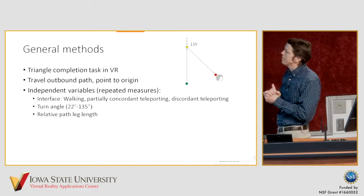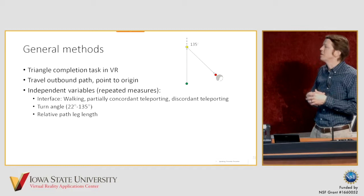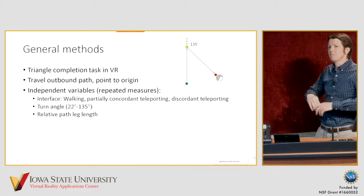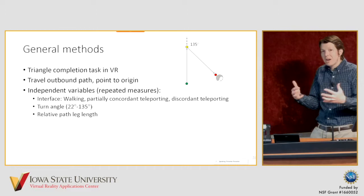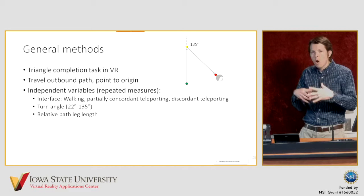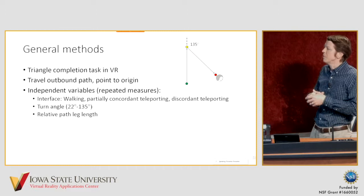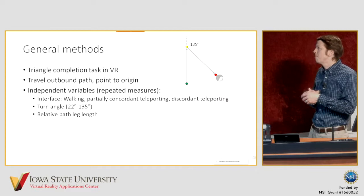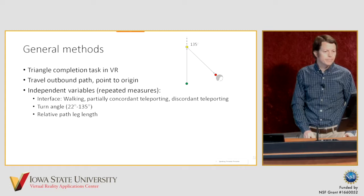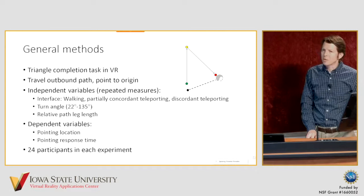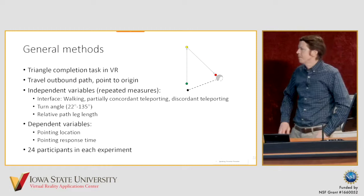We manipulated the turn angle, which could range from 22 to 135 degrees and could be left or right so that not every triangle was exactly the same. We also manipulated the relative path leg lengths to keep trials varied. These all had to fit within the lab because of the walking interface condition, so these are relatively small triangles with path leg lengths roughly 6 to 10 feet per leg. We had 24 participants in each experiment completing each condition.